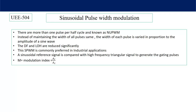Instead of maintaining the width of all pulses the same, the width of each pulse is in direct proportion to the amplitude of a sine wave. Our purpose is to obtain sinusoidal output voltage, and we filter the output voltage of the inverter. So if the harmonics across the output voltage are less, then the filter size — the inductor and capacitor size — will reduce, which reduces the cost of the system.